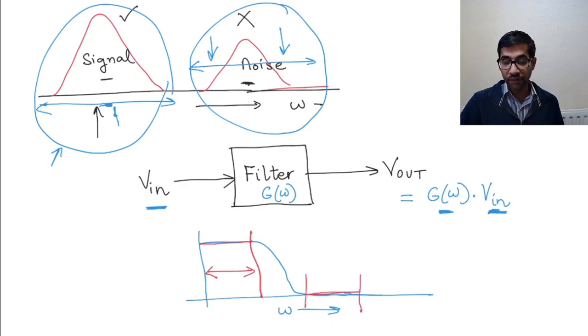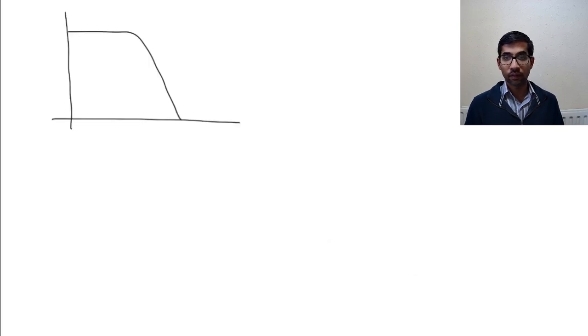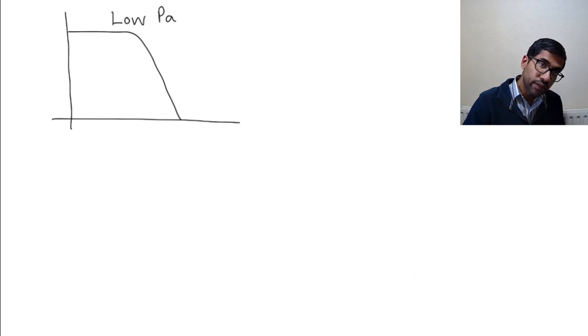So that's the way we want to build frequency filters. Now there are different kinds of filters that you can build depending on the shape of this gain-frequency curve that we can have. So some filters have a gain-frequency characteristic which look like this. These filters are called low-pass filters. The reason these filters are called low-pass filters is...